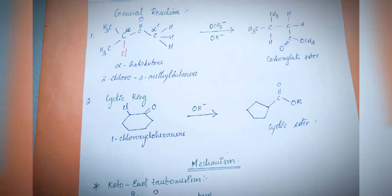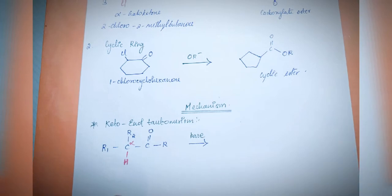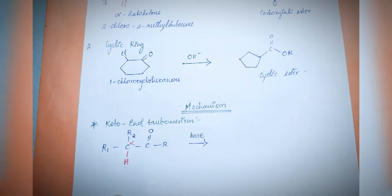The next reaction involves a cyclic ring structure. In rearrangement reactions there is no major difference between open chain and cyclic structures. Taking 2-chlorocyclohexanone in the presence of methoxide ion, you will get a cyclic ester. These are the two reactions I will discuss in detail with their mechanisms — one for cyclic ring structures and one for open chain structures.